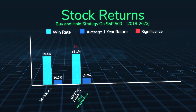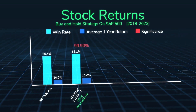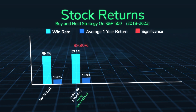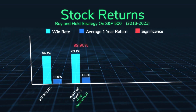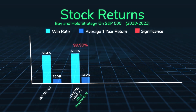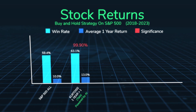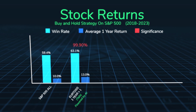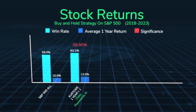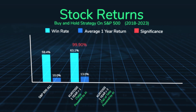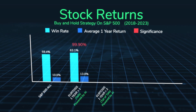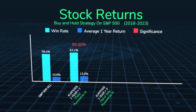The average return went from 10% to 13%, and the win rate went from 59% to 63%, with 99.9% statistical significance. That means there is a 0.1% chance we would find these results randomly. Then I said: what about the tail of the tails — the upside kurtosis?